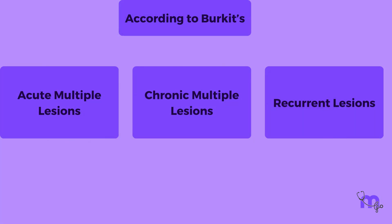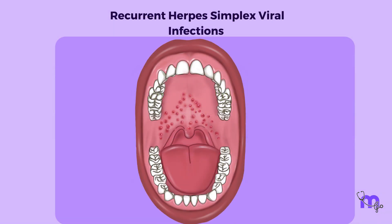The third category of recurrent lesions includes recurrent herpes simplex viral infections.